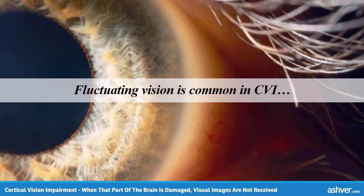Fluctuating vision is common in CVI. Children may see one day and not the next, or one hour and not the next — it is very unpredictable. Some seizure medications, such as Dilantin, Tegretol, and Phenobarbital, can cause this fluctuation in sight or make it worse.